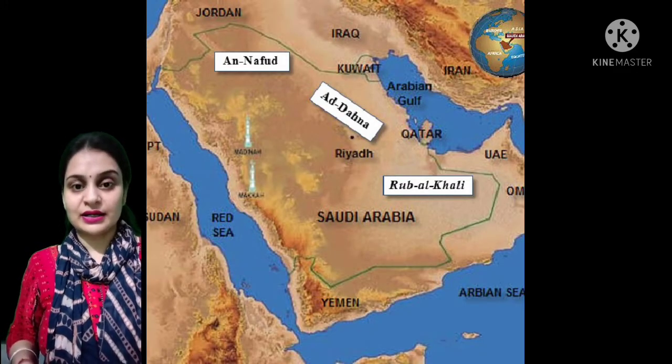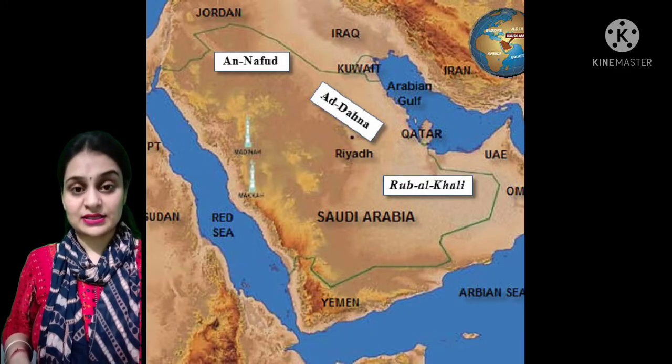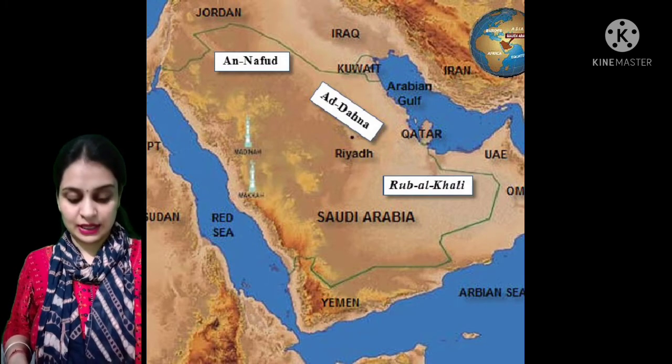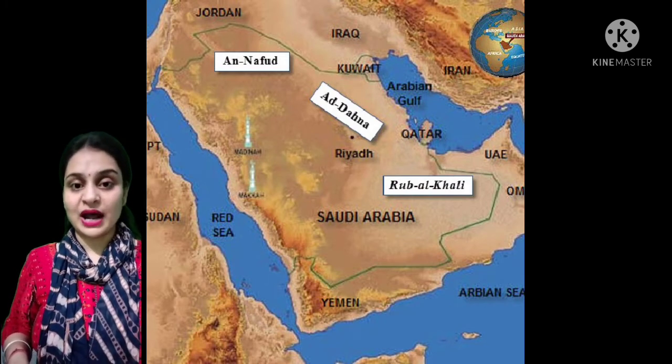The capital of Saudi Arabia is Riyadh. Saudi Arabia is the only country which is named after a dynasty — it is named after the ruling family, the House of Saud.